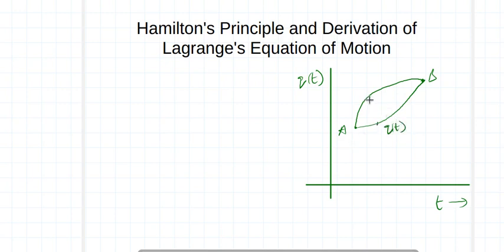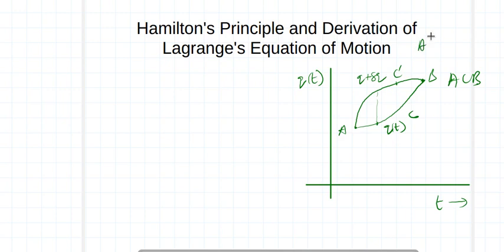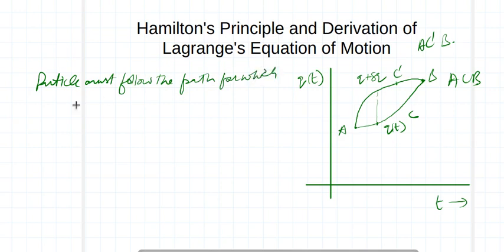One path is q(t) and another is q(t) + δq — there is a change in it, similar to the earlier case with δy. The particle may go from A to B following path ACB, or it may follow path AC'B. Which path must the particle follow? It must follow the path for which the action is least. This is known as Hamilton's principle of least action.